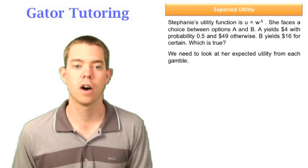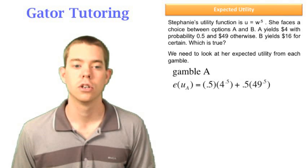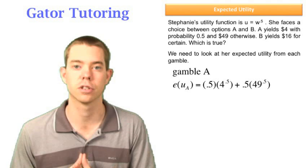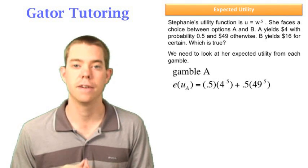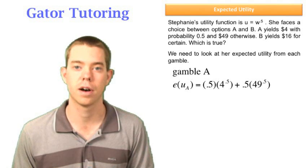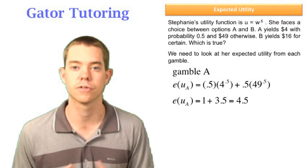Well, to solve this, we need to look at her expected utility from each gamble. Gamble A, she has a 50% chance of getting $4, so $4 raised to 0.5 times 0.5. She has a 50% chance of getting $49, so the square root of 49 times 0.5. We add these up and we see that her expected utility from gamble A is 4.5.